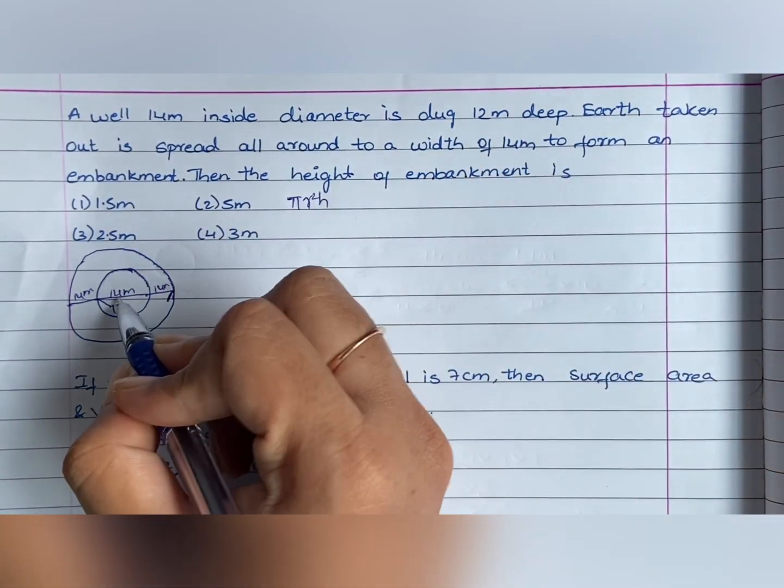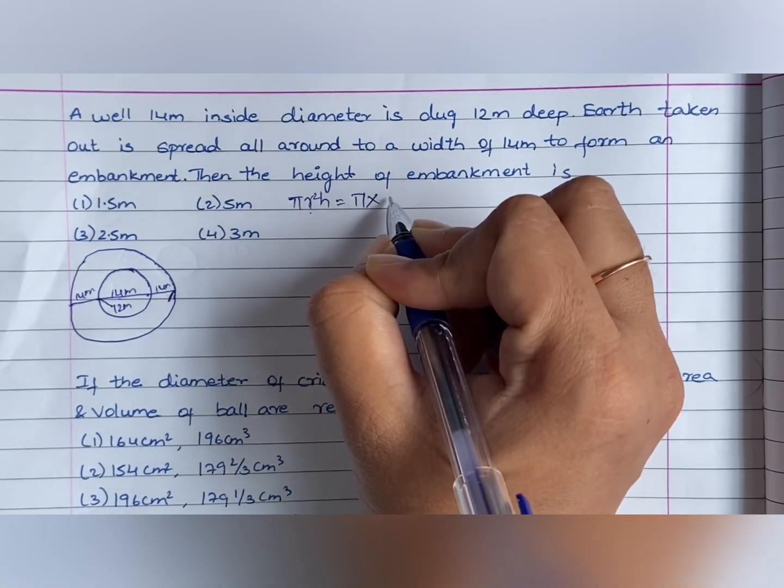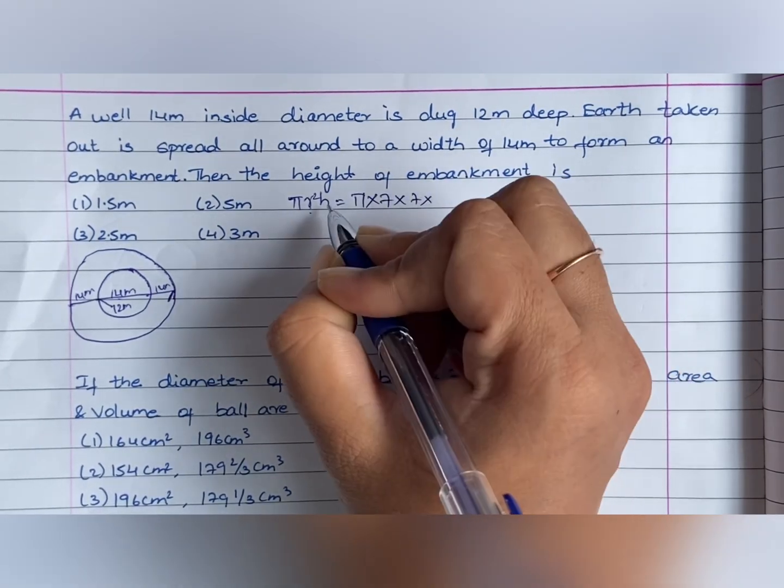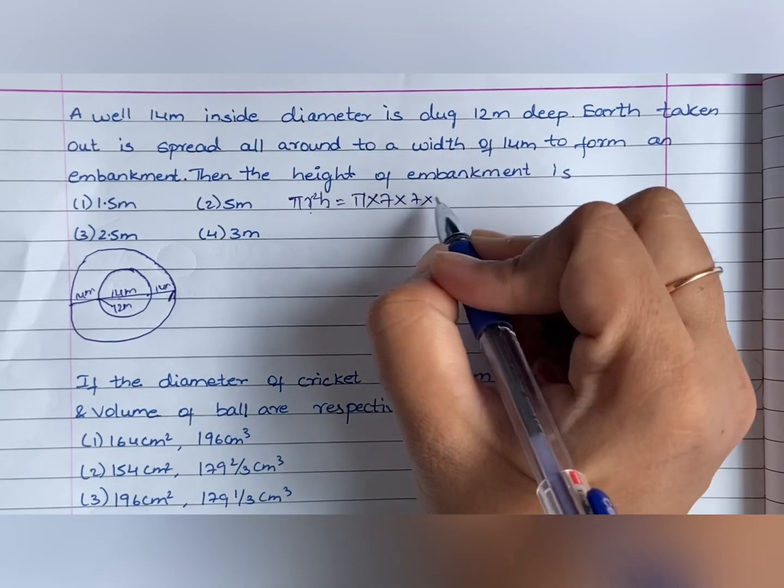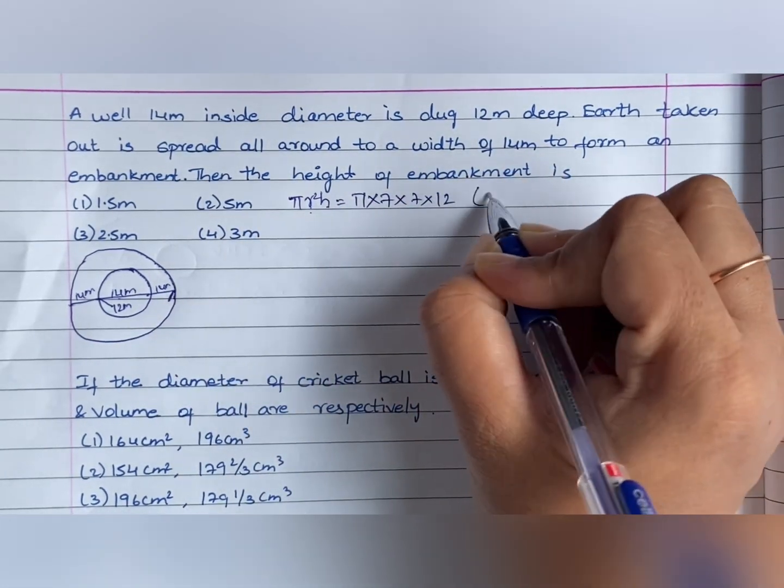R will be 7. Pi into 7 into 7. Height, that is 12 meters deep. This is the volume of this inside.